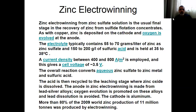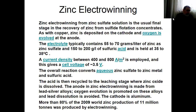Zinc electrowinning from zinc sulfate solution is the usual final stage in the recovery of zinc from sulfate solutions. As with copper, zinc is deposited on the cathode, and oxygen is evolved at the anode because the oxidation of water takes place to get free electrons. Those free electrons are taken by zinc to run the reaction. Where there is oxidation, there is reduction — zinc gets electrons and deposits on the cathode, and the water is oxidized to give off two electrons and evolve oxygen. The electrolyte typically contains 55 to 70 g/L of zinc as sulfate and 150 to 200 g/L of sulfuric acid, at 35 to 38°C — lower than that for copper.